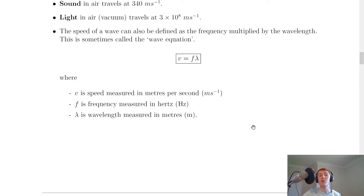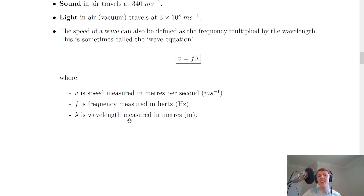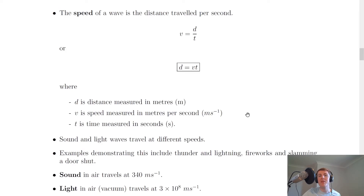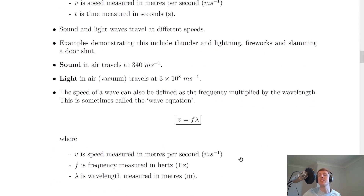The second equation we can use to calculate the speed of a wave is the wave equation: the speed of a wave equals frequency multiplied by wavelength, written as v = fλ. Speed is in meters per second, frequency is in hertz, and wavelength is a distance measured in meters. So in summary we have two equations: D = VT (distance equals speed times time), and v = fλ (speed equals frequency times wavelength).